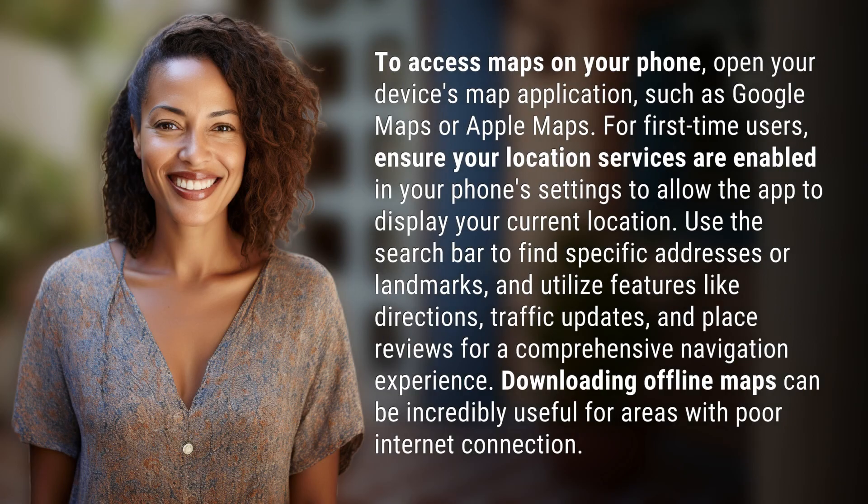To access maps on your phone, open your device's map application, such as Google Maps or Apple Maps. For first-time users, ensure your location services are enabled in your phone's settings to allow the app to display your current location.